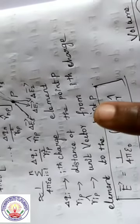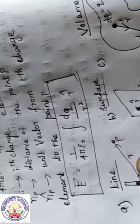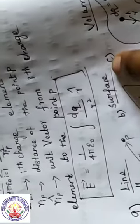Continuously charge distribution considers three categories. First is the line charge distribution. Second one is surface charge distribution. Third one is the volume charge distribution. First we take the line charge distribution — a charged wire. The charged wire produces the charge at point P, and distance is R, R̂ is the unit vector. The differential element is dl, and dq is equal to lambda into dl.